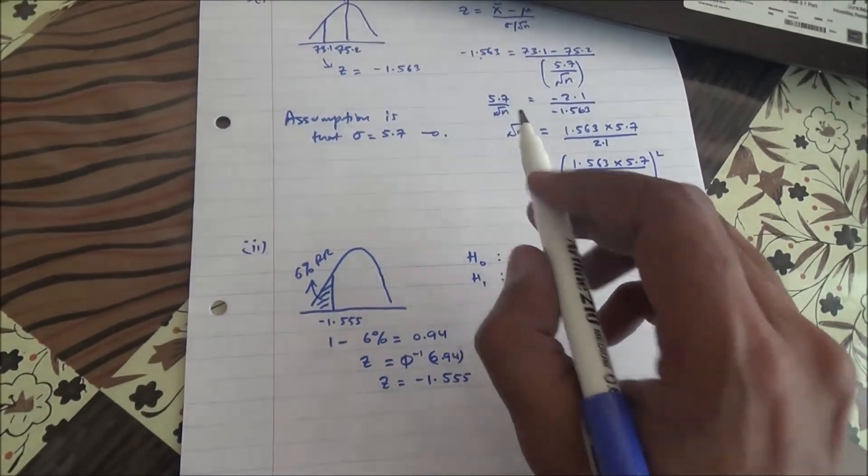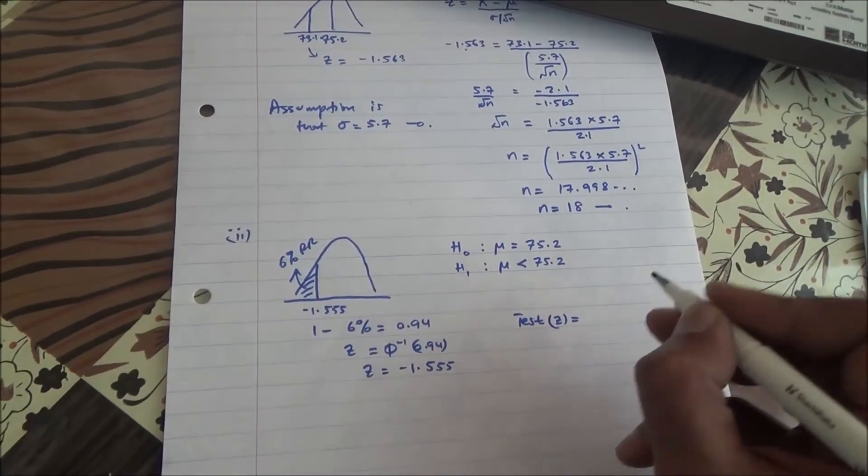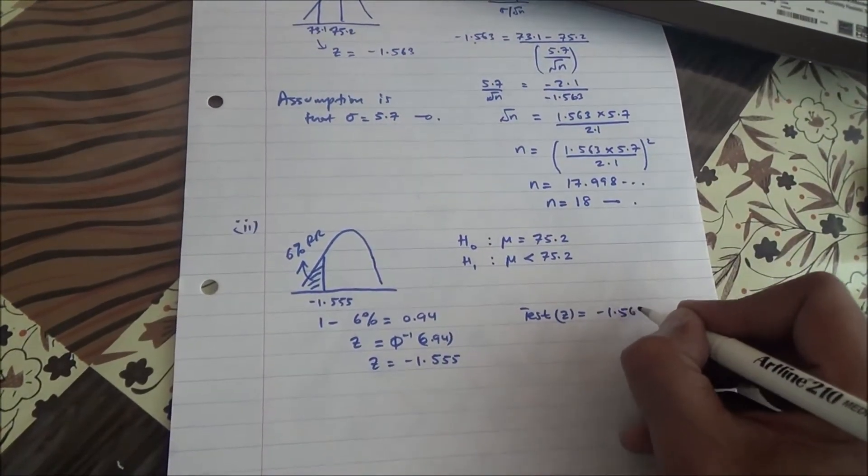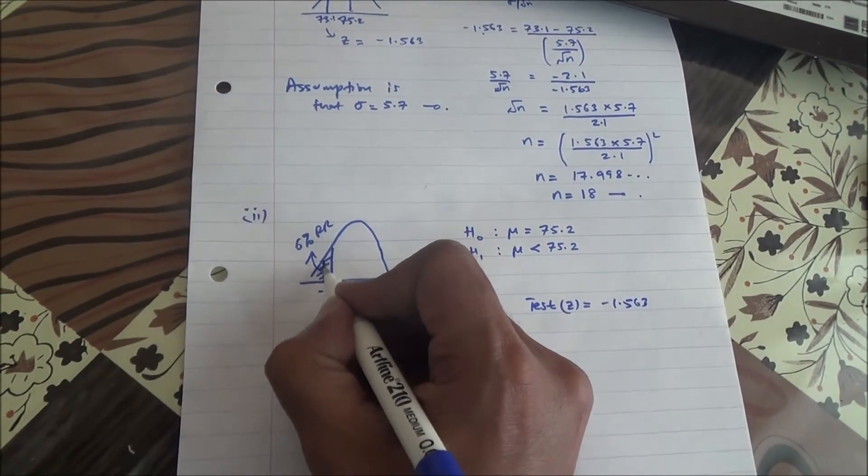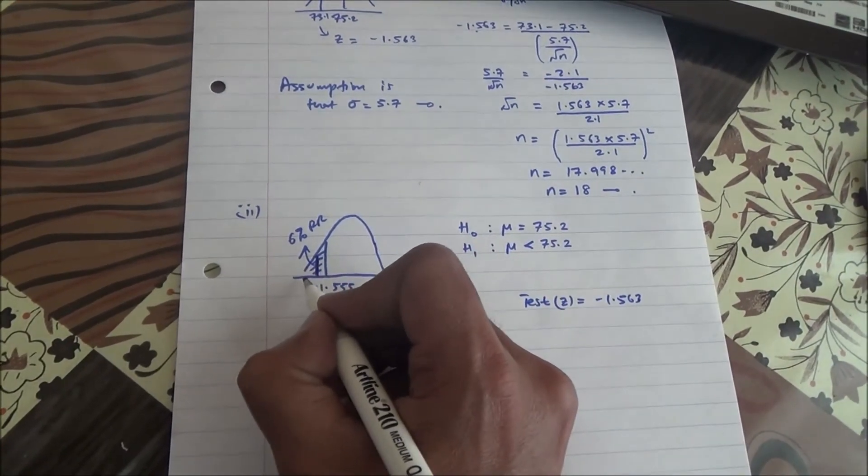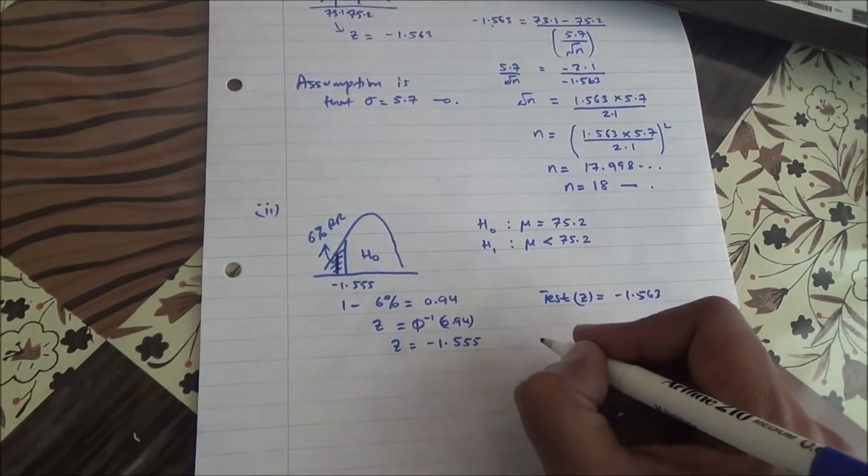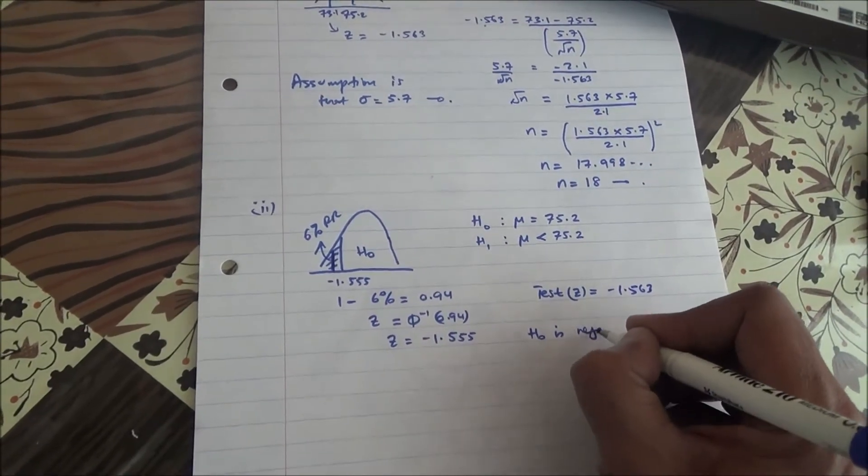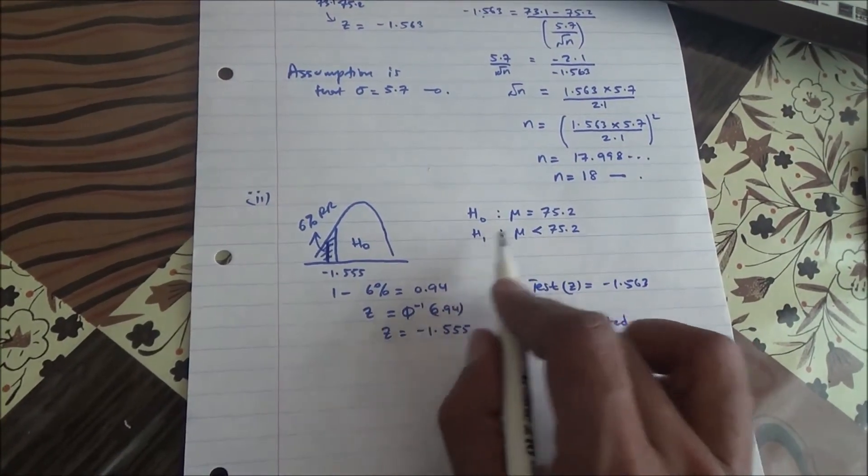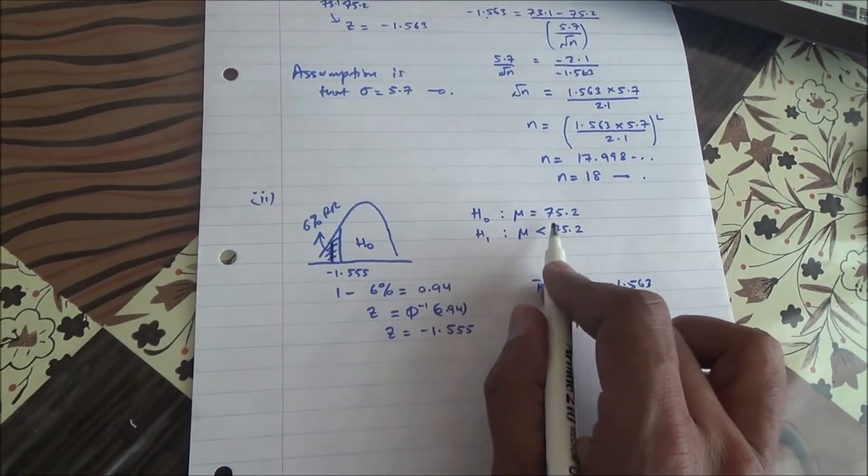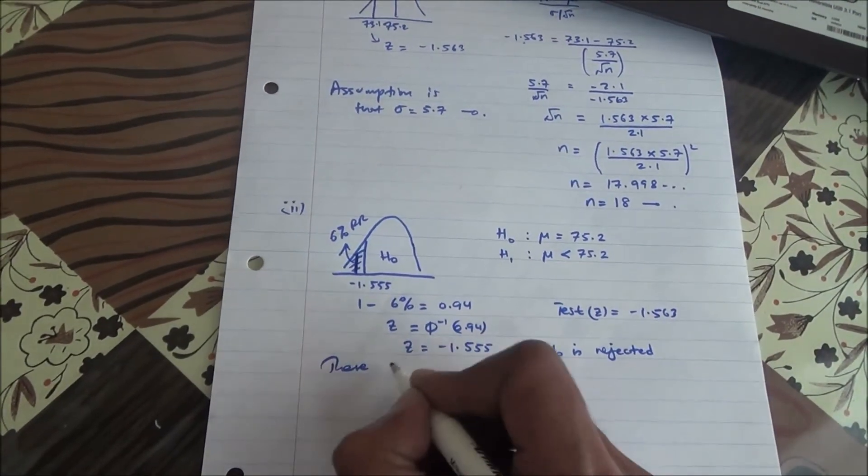Now when we look at the test statistic, the value that was found was the test value of z, it was found to be negative 1.563. So negative 1.563 is going to fall somewhere here, in this region here, so it's going to fall further to the left. That means it is within the rejection region, therefore H0 is rejected. Meaning that we are going to accept H1, that is, the mean is less than 75.2. So the plants are getting shorter.